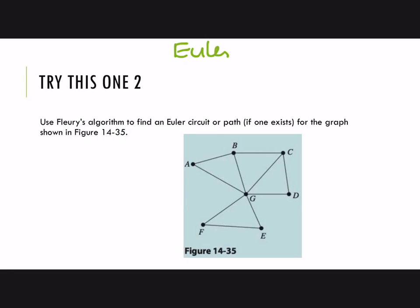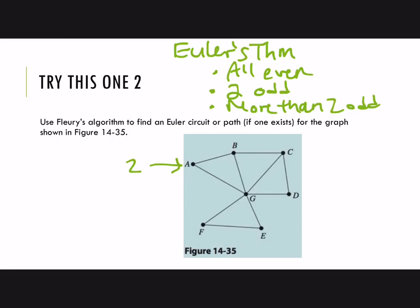So using Euler's theorem, we need to look at the degrees of the vertices and see which case we have. Do we have all even vertices, or exactly two odd and the rest even, or more than two odd? Looking at vertex A, there are two edges meeting at vertex A, so that has degree 2. That's even.